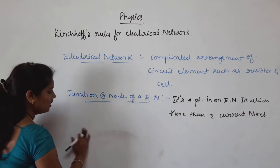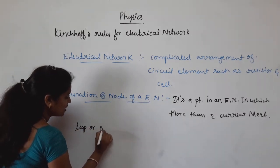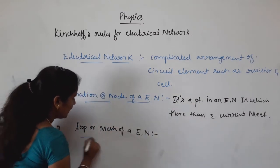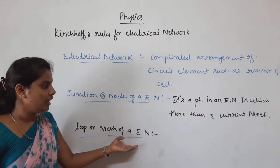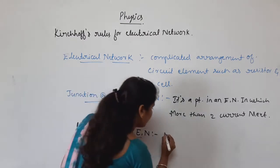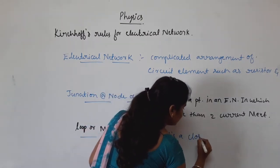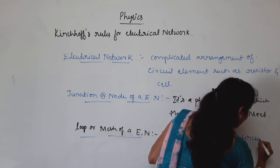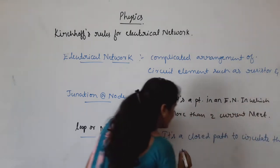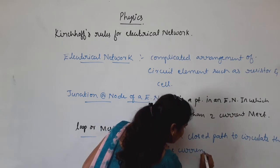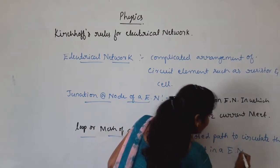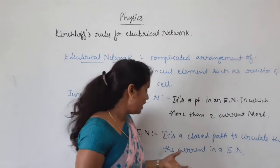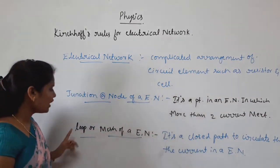The next term is loop or mesh of an electrical network. It is a closed path for current to circulate in an electrical network. This is called as a loop or mesh of an electrical network.